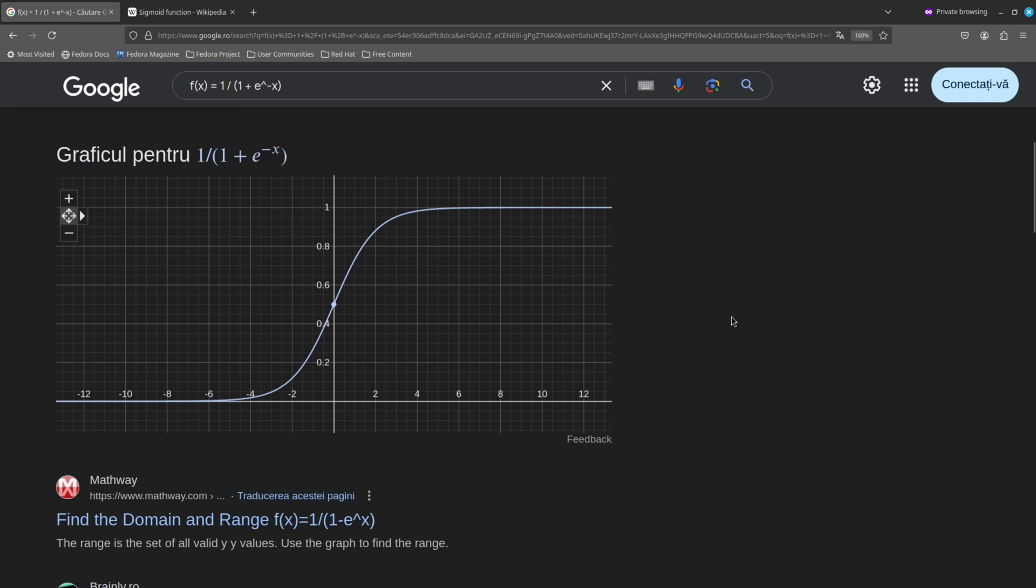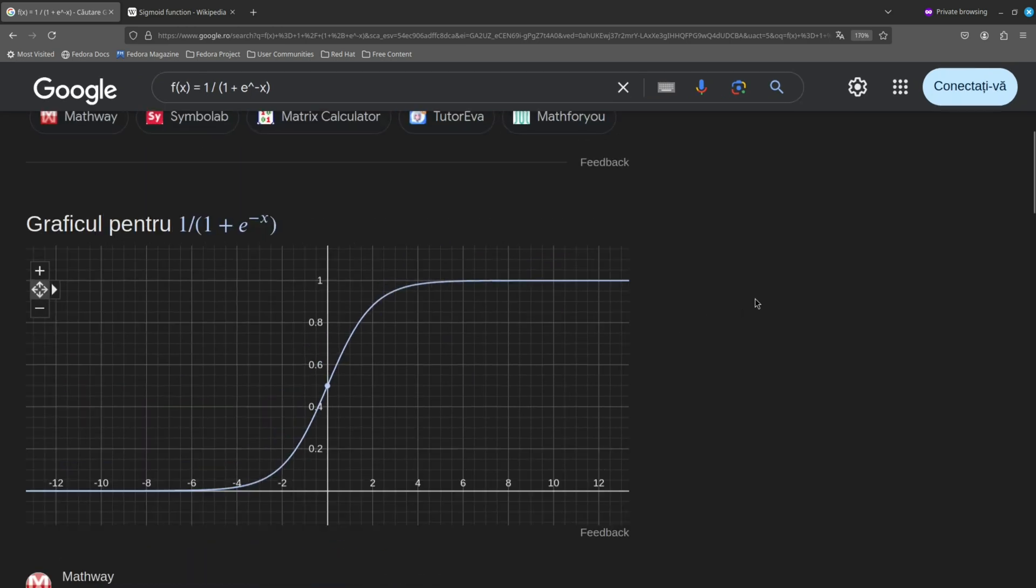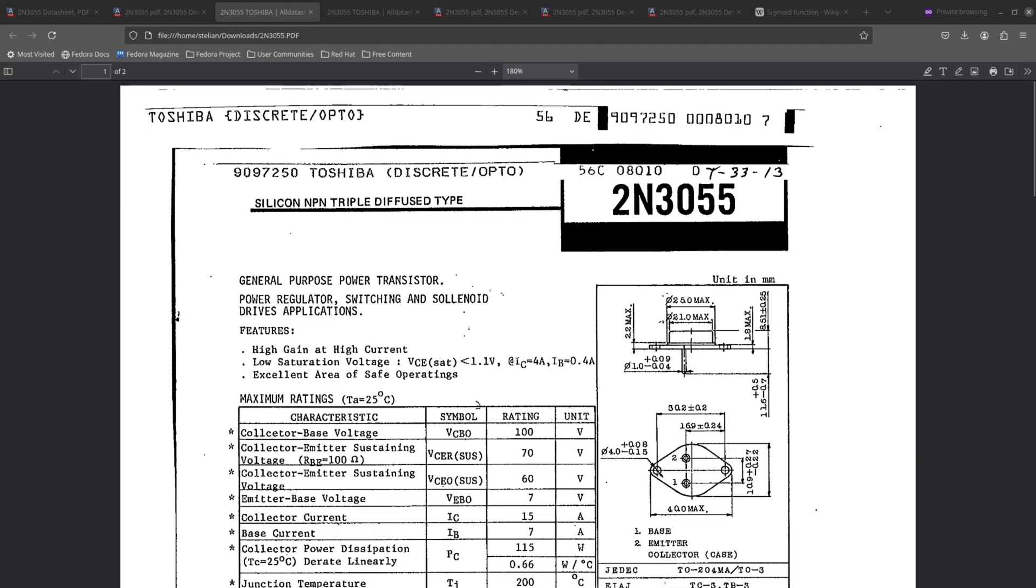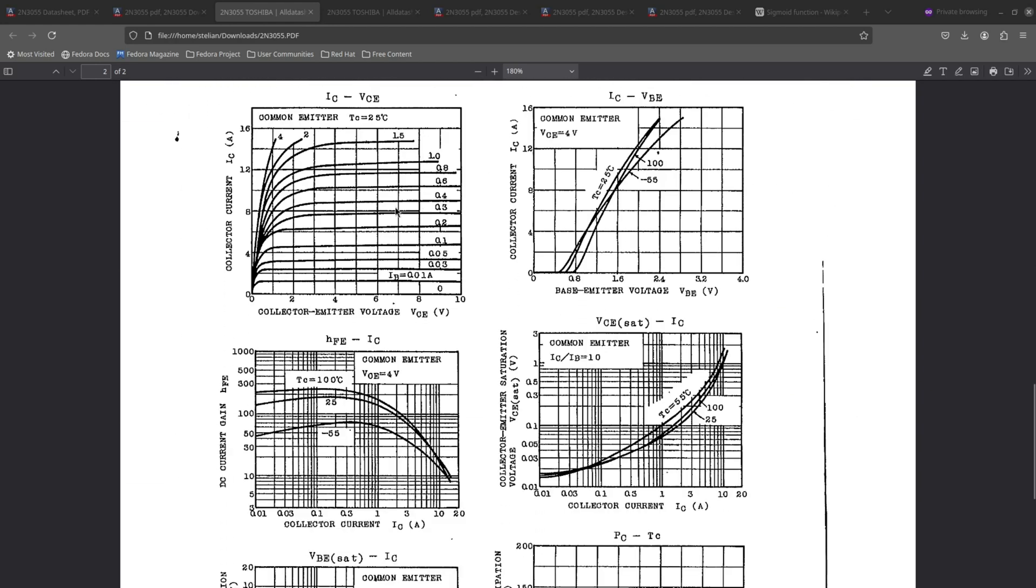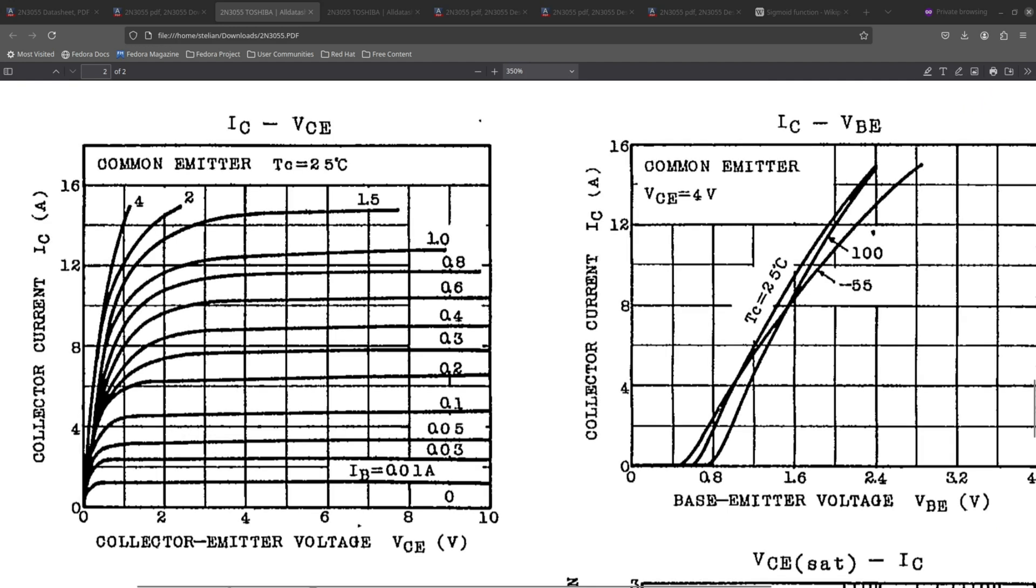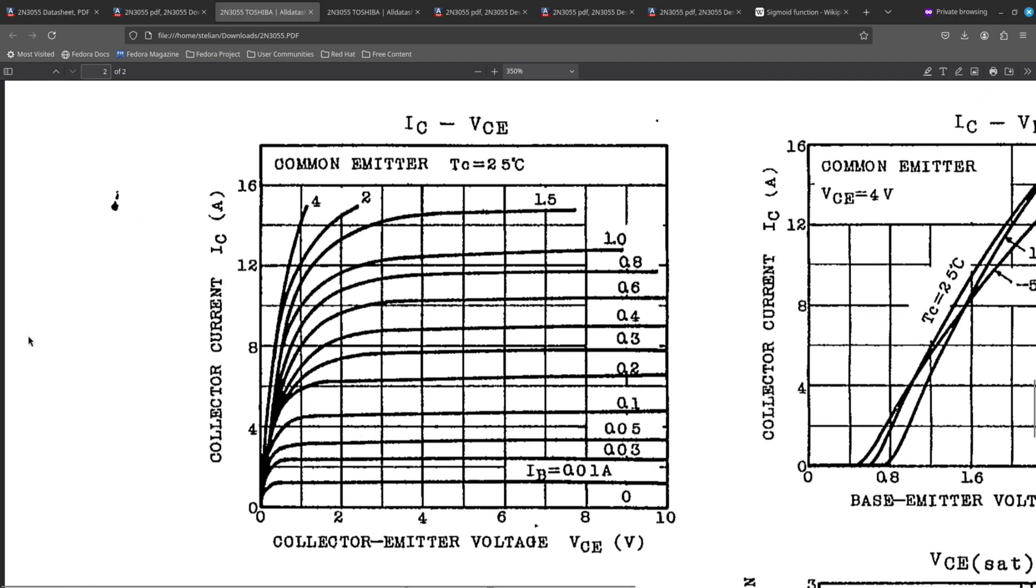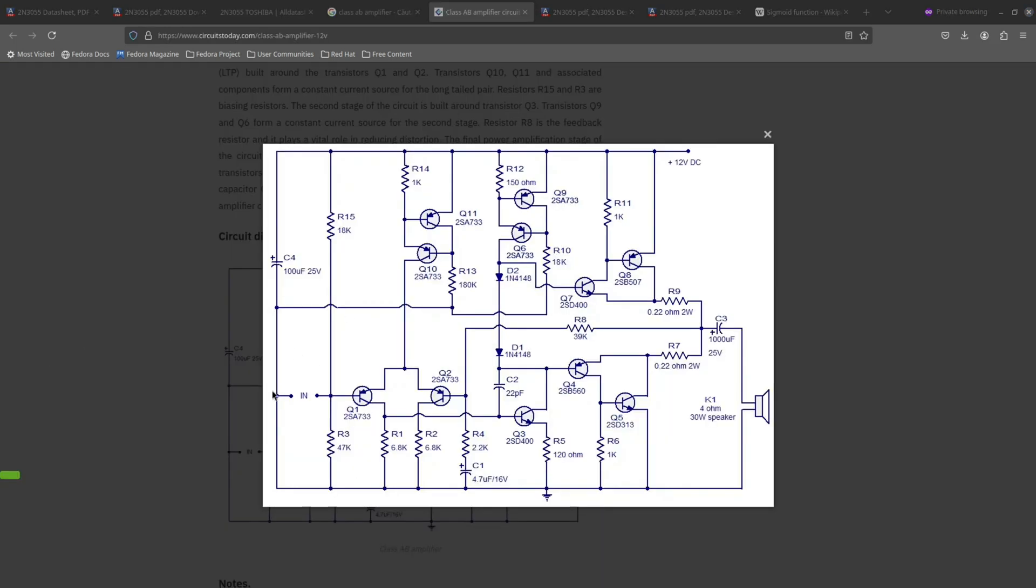Well, active devices like transistors or vacuum tubes are inherently nonlinear. To see this, you just have to look at their datasheets. See, this looks just like our theoretical sigmoid from before. So to make them behave linearly, circuit designers apply all sorts of tricks which are way beyond the purpose of this video. Let's just say that nonlinearities can be reduced, but they will never be zero, thus an amplifier will always have some sort of distortion.